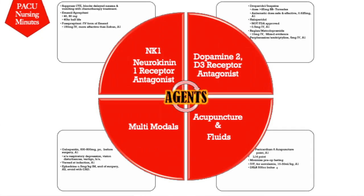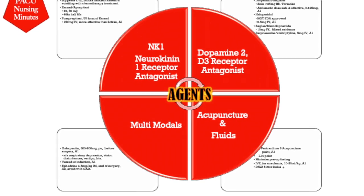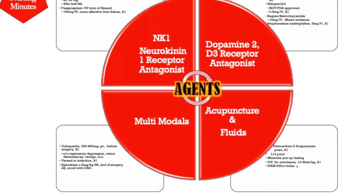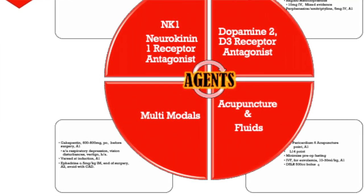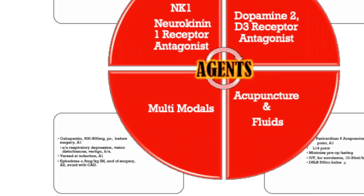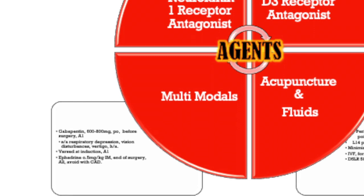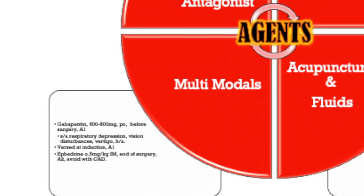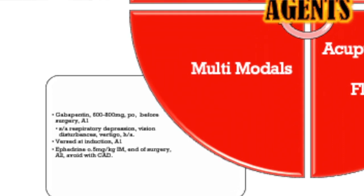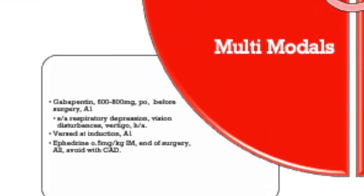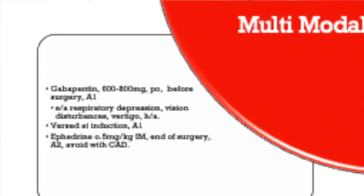One recommended multimodal agent is gabapentin. We commonly see this with orthopedic surgery patients, but you may also see it ordered for laparoscopic and other surgical procedures to minimize post-op nausea and vomiting. The recommendation is 600 to 800 milligrams pre-op, and this carries an A1 recommendation. Remember that gabapentin can cause respiratory depression, visual disturbances, and headaches, so when recovering patients, ask anesthesia about any pre-op multimodals given.